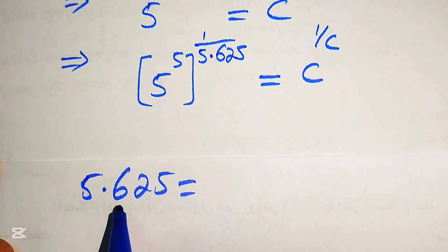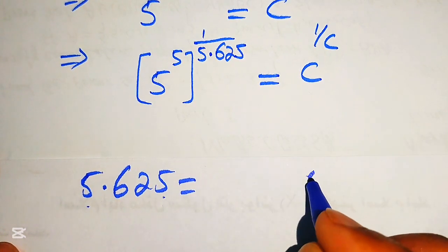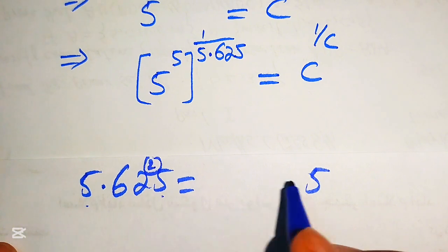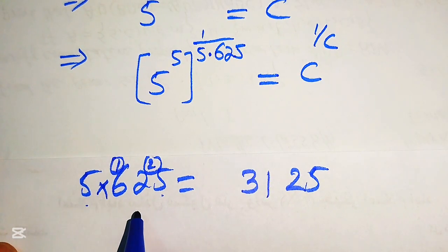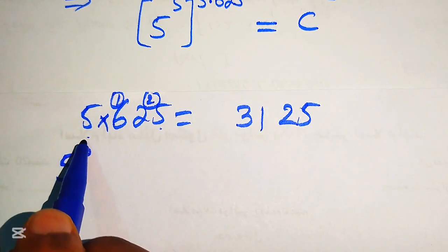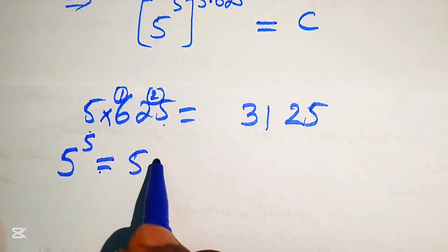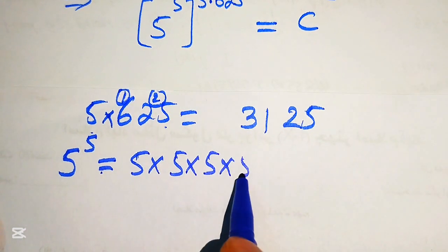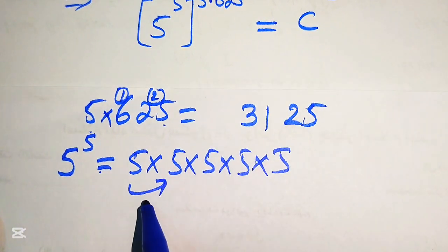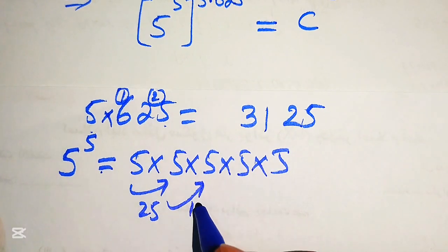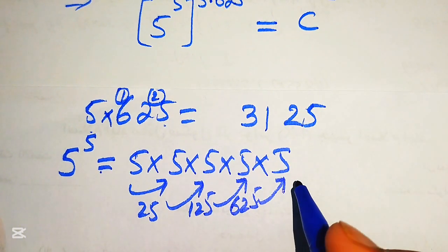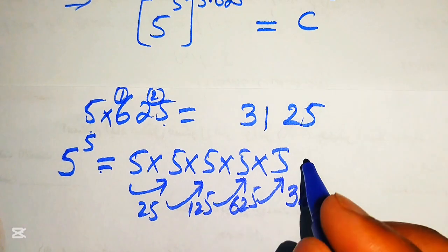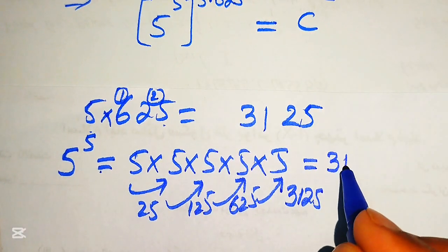Computing 5 times 625: 5 times 5 is 25, carry 2; 5 times 2 plus 2 is 12, carry 1; 5 times 6 plus 1 is 31 — so 5 times 625 equals 3125. For 5 to the power of 5, multiplying 5 by itself five times: 5, 25, 125, 625, 3125. So 5 to the power of 5 also equals 3125.